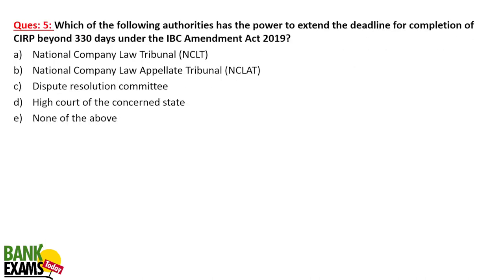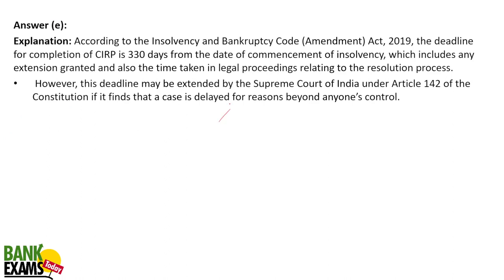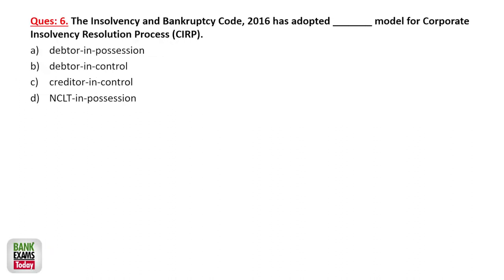Which of the following authorities has the power to extend the deadline for the completion of CIRP? The Corporate Insolvency Resolution Process deadline is 330 days, which can be extended only by the Supreme Court of India. So 'none of these' is the correct answer. Only the Supreme Court of India, under Article 142 of the Indian Constitution, can extend the CIRP deadline beyond 330 days. The IBC 2016 has adopted the 'creditor in control' model for corporate insolvency resolution process.